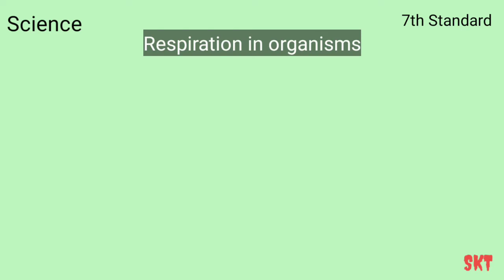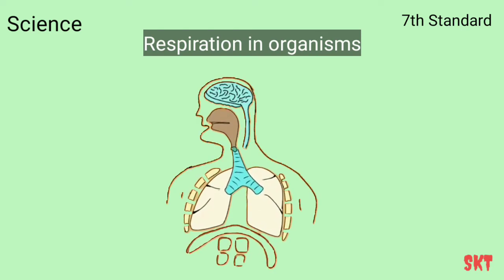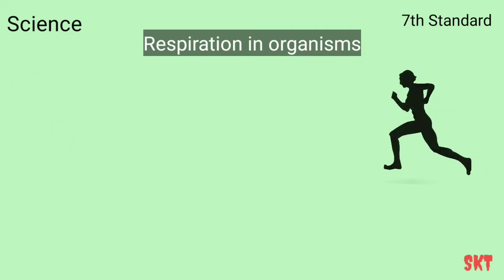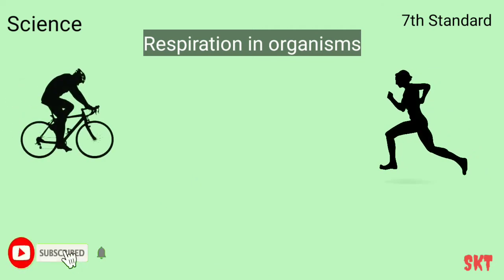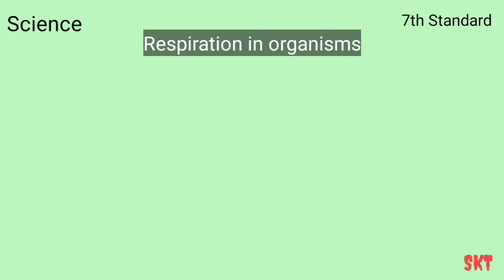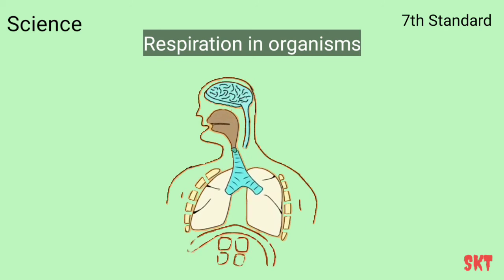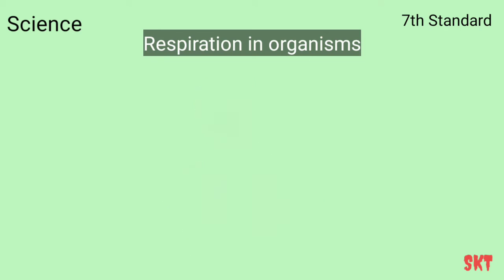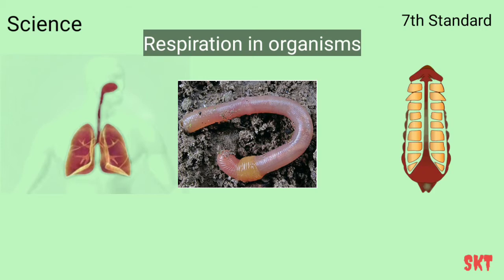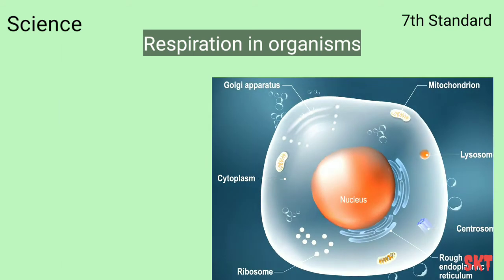Have you ever wondered why we breathe very fast when we do heavy physical activities like running, cycling, or walking for many hours? The first thing that comes to mind is respiration. All living beings on this earth do respire. In this chapter, respiration in organisms, we are going to understand how the process of respiration takes place — in humans, earthworms, cockroaches, and even microscopic organisms like cells.